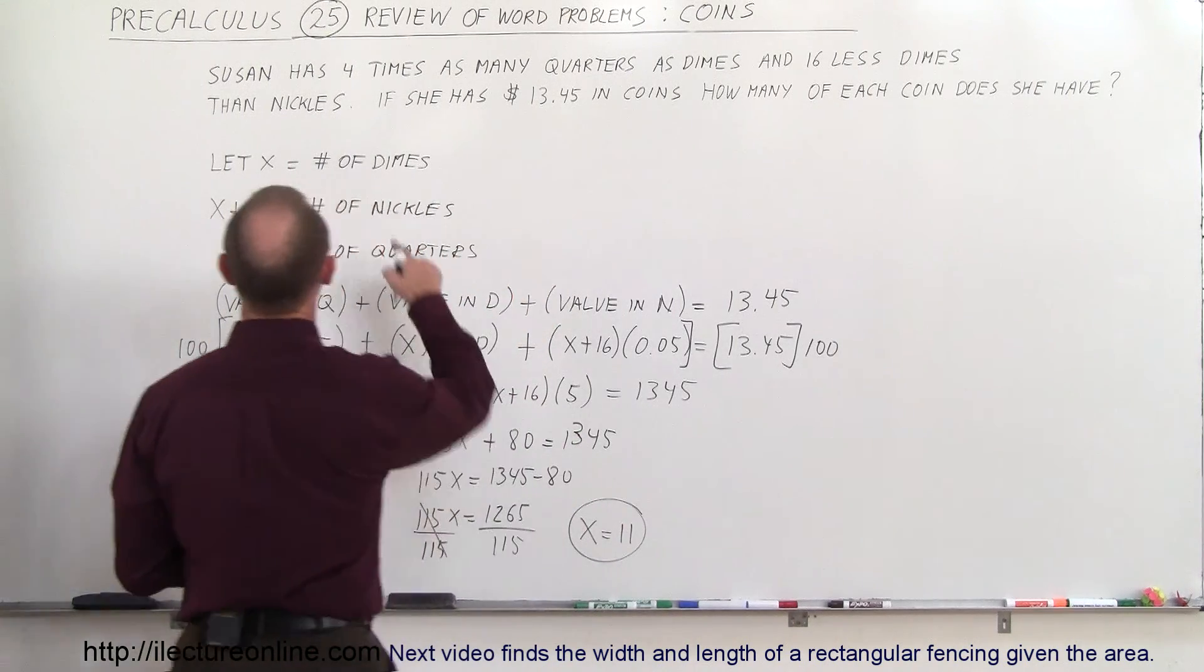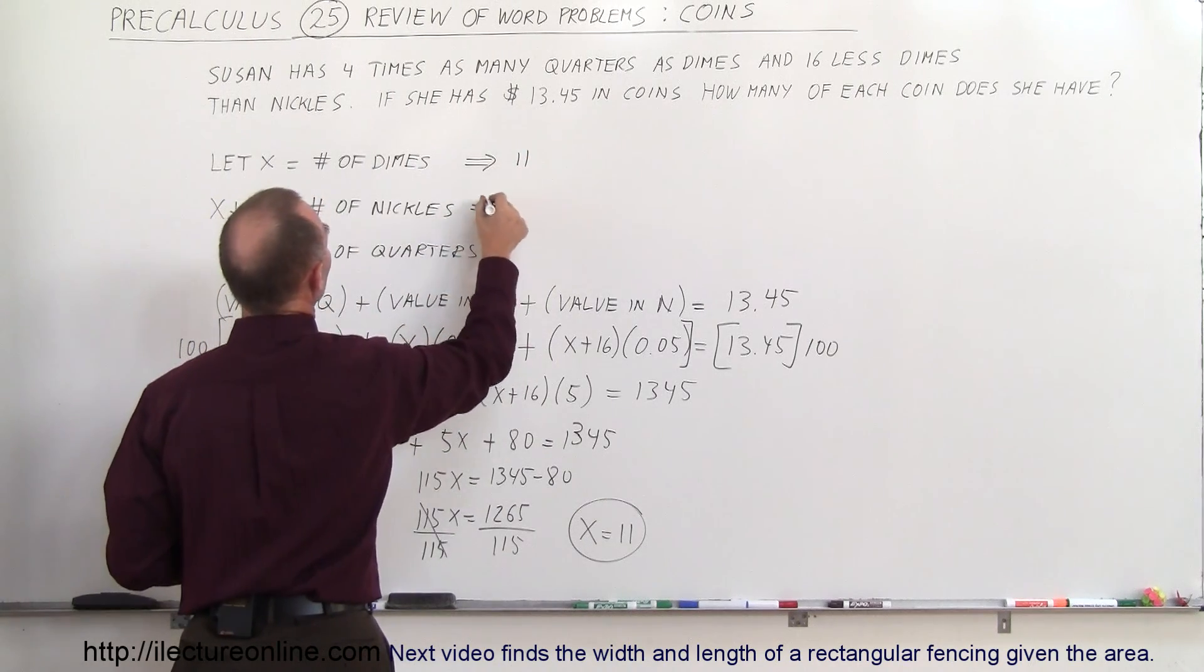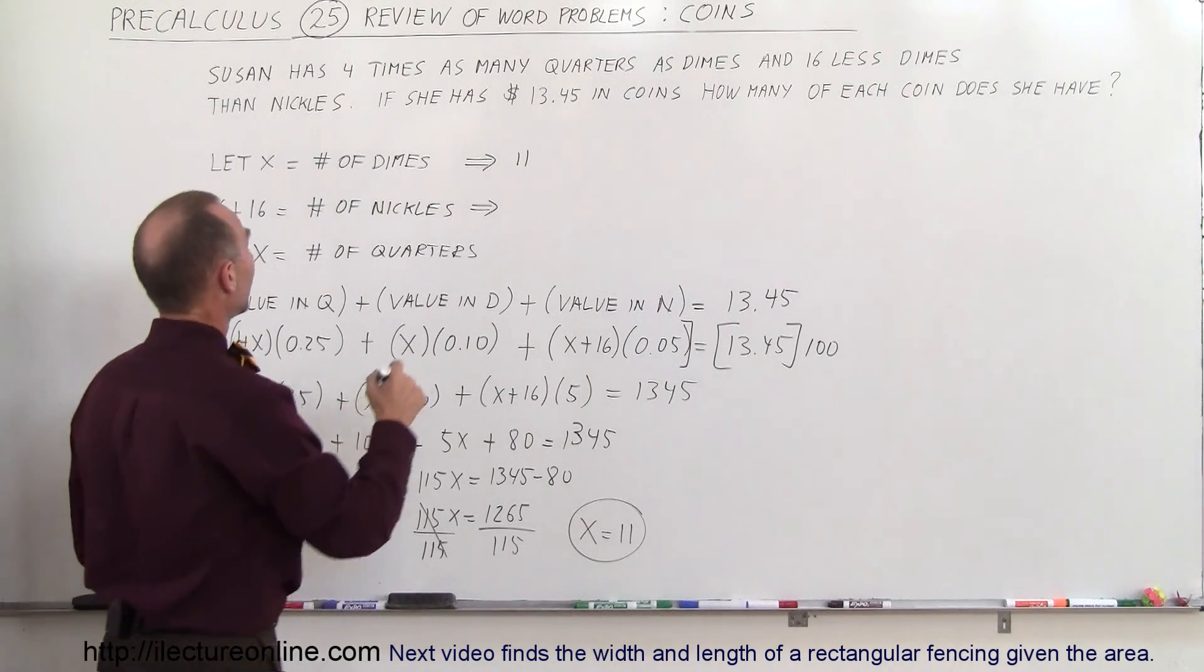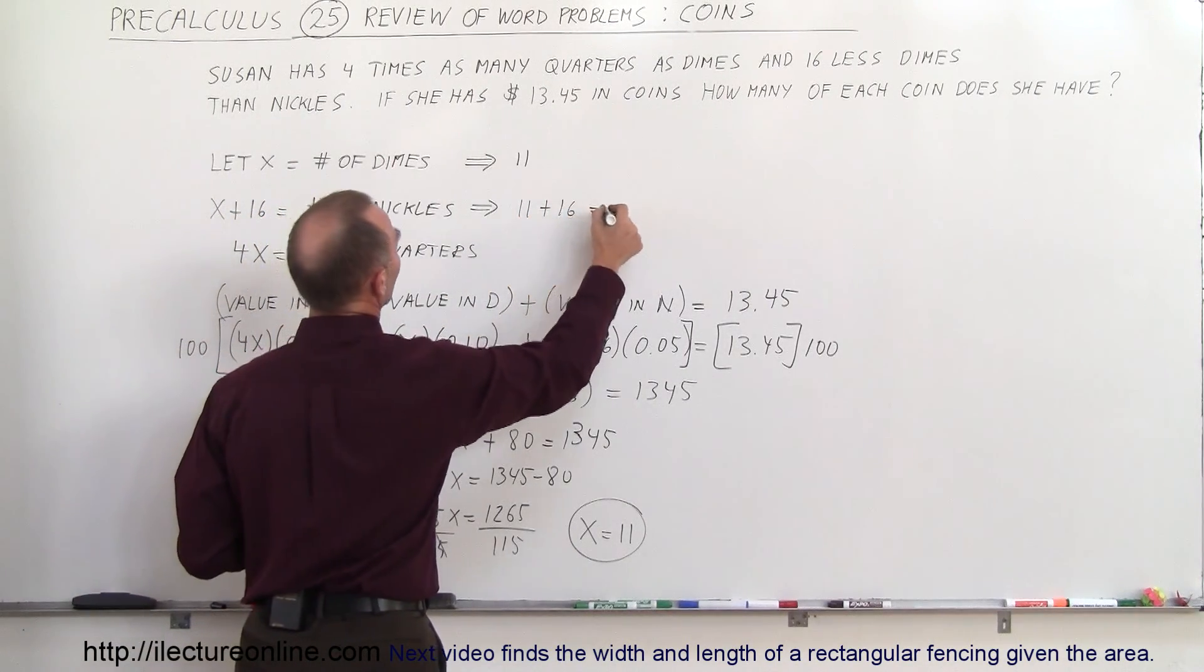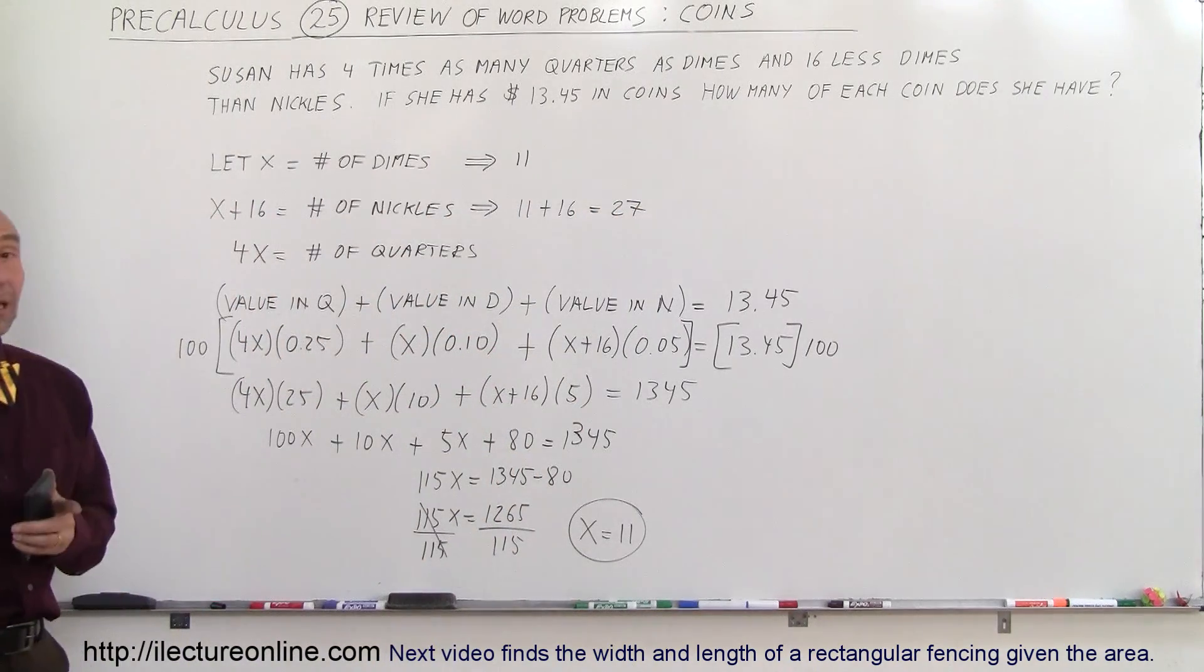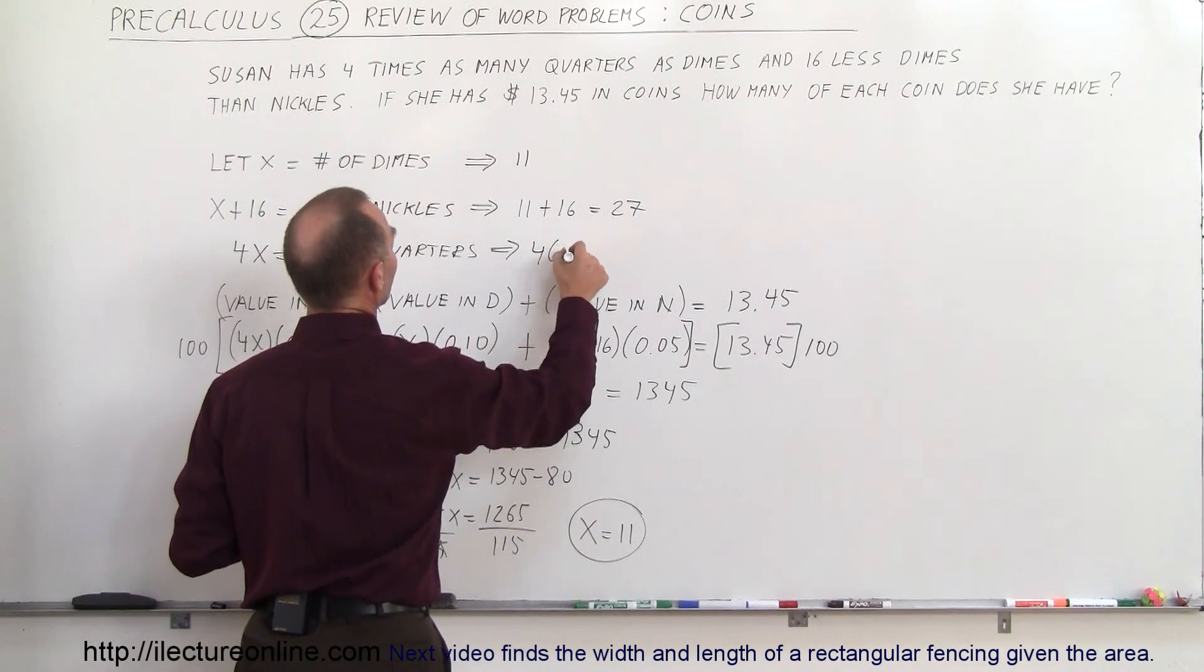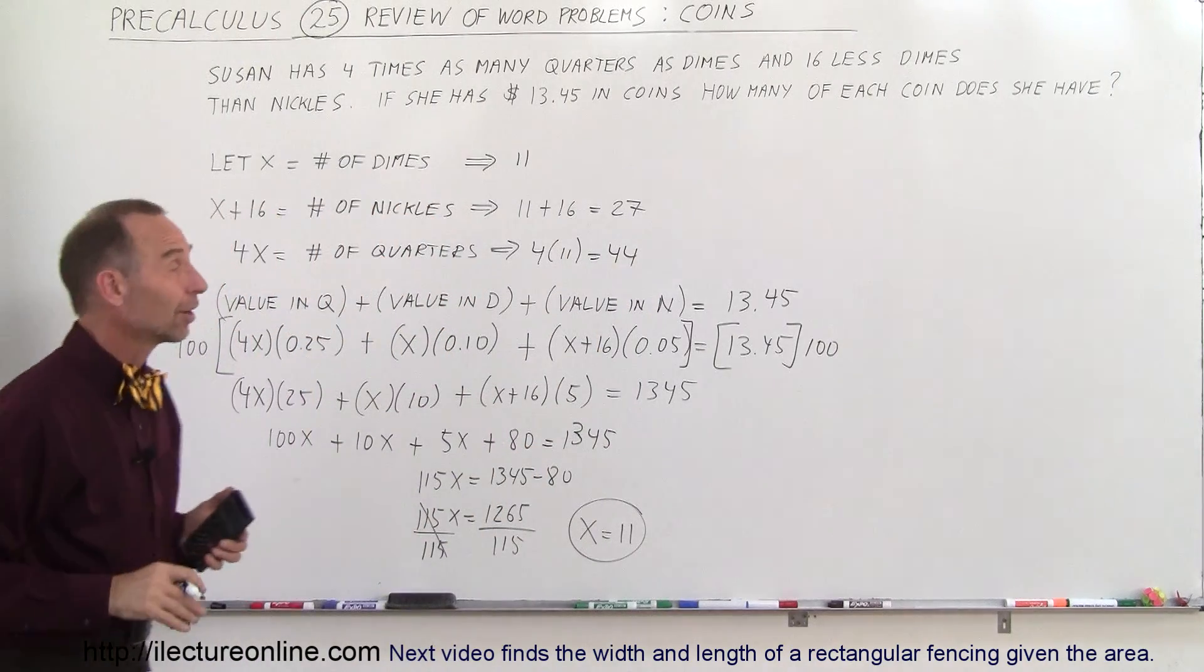Which means how many dimes does she have? She has 11 dimes. How many nickels? She has 16 more nickels than dimes. So that would be 11 plus 16, which is equal to 27. And finally, 4 times as many quarters, so 4 times 11, or 44 quarters.